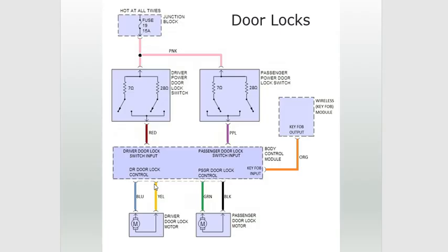Here's one more example that's a little bit unique — a power door lock circuit. In order for these power door locks to lock and unlock, we need to reverse the polarity. To lock the doors, we might apply a power to one wire and a ground to the other wire. To unlock them, we reverse that — ground on one side and power on the other. So each of these wires needs to have both a high side driver and a low side driver connected to it, so that we can apply either power or ground to lock or unlock the doors.